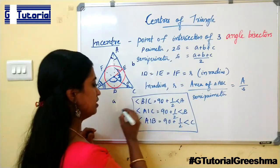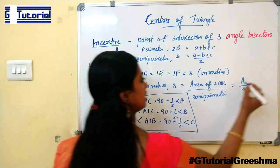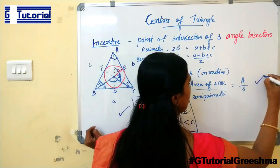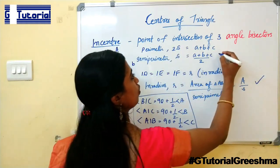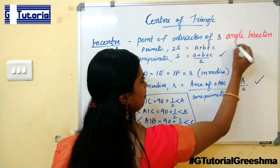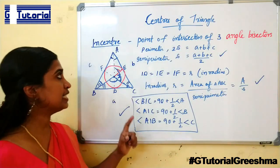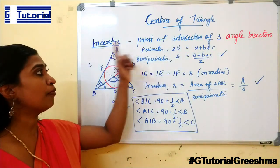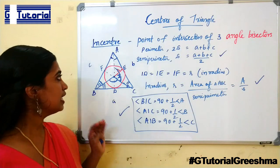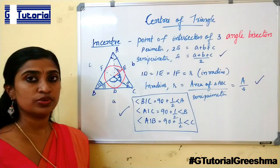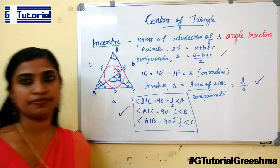These are the important things to note from the topic of incenter: you have to study the angle formulas, the equation for inradius, and you should know what semi-perimeter is. Incenter is the point of intersection of the three angle bisectors. Now we can move on to the next topic, that is circumcenter.